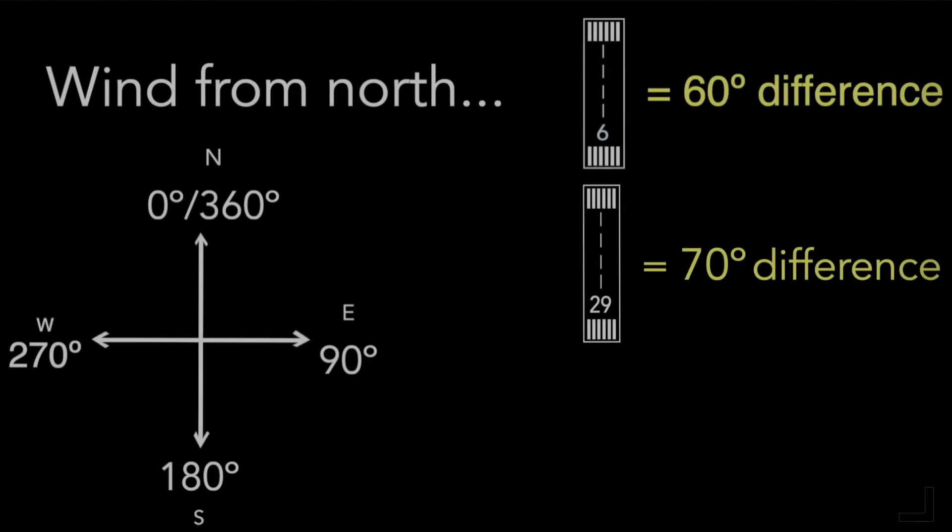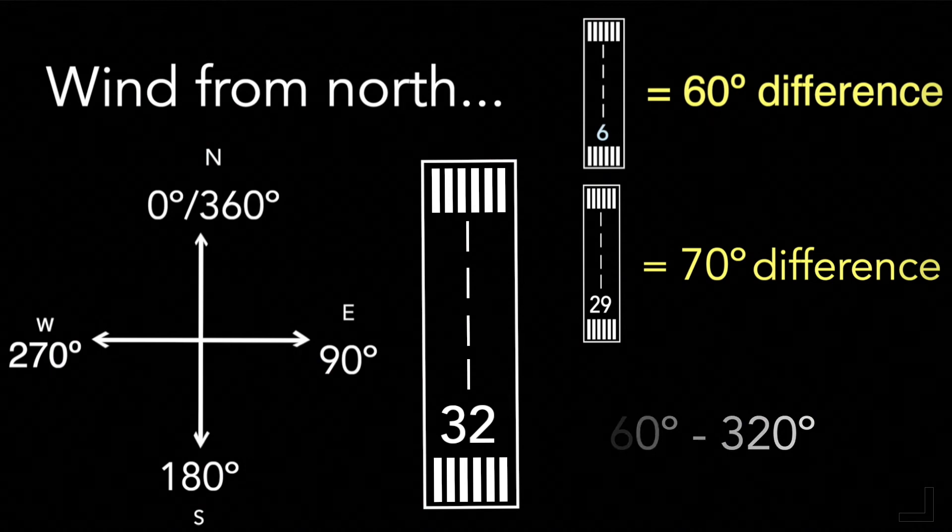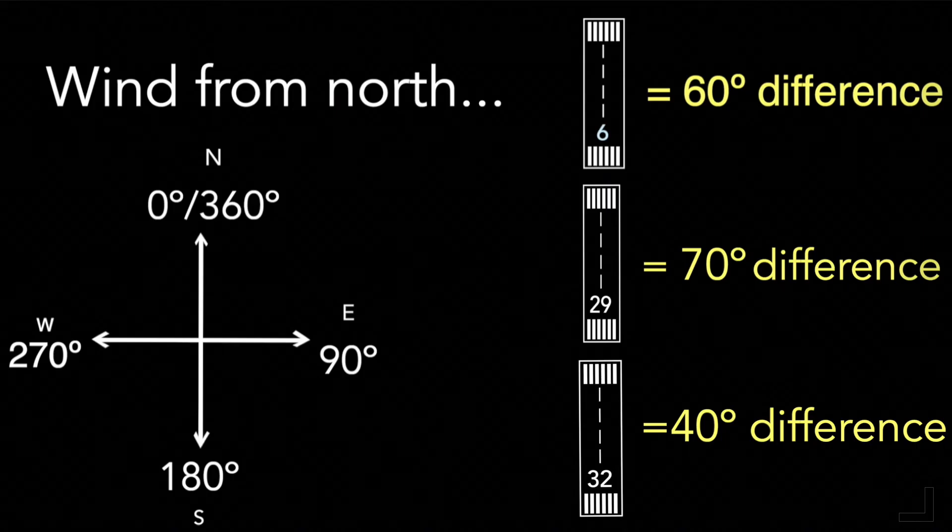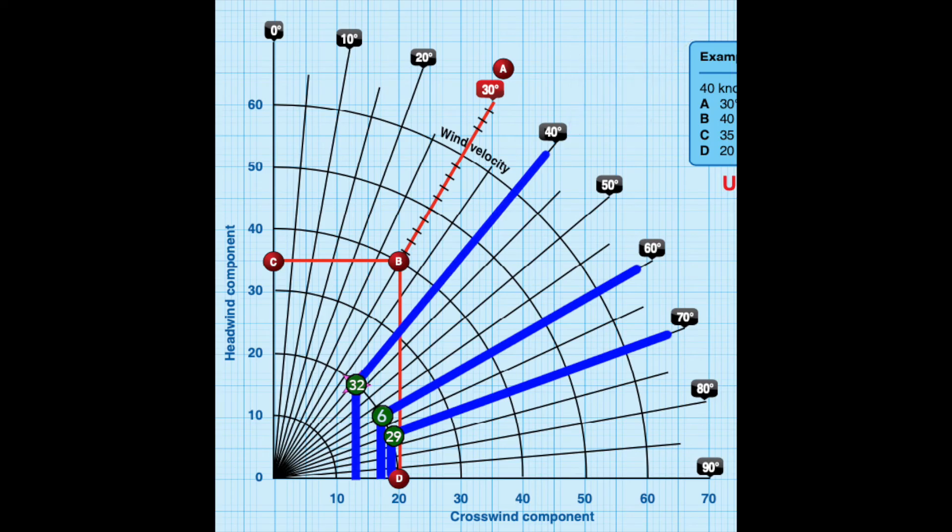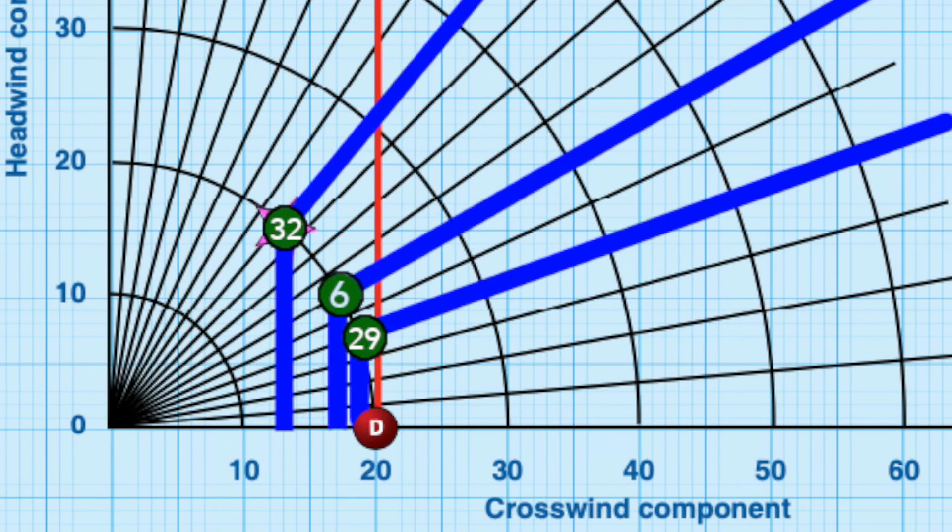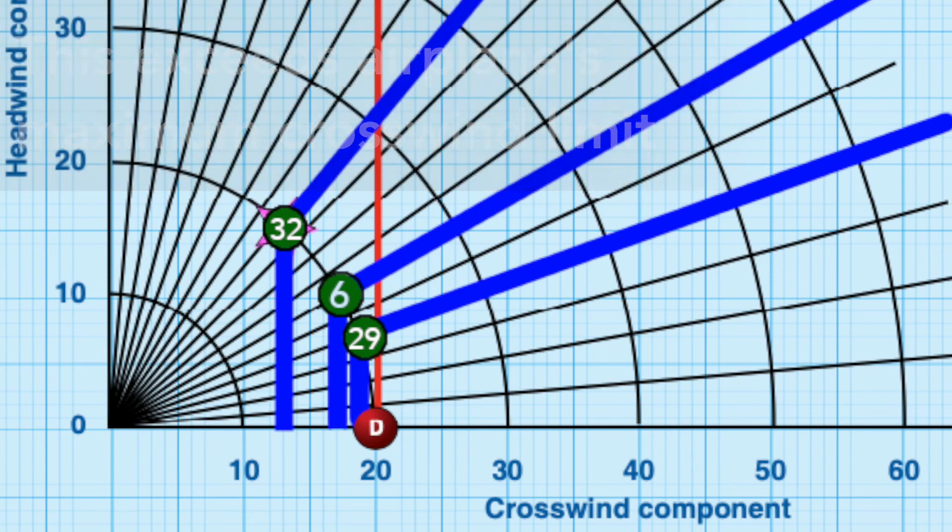Lastly with runway 32, we subtract 320 from 360. The directional difference is 40 degrees. Plotting that on the chart, we end up with this position. Now we can compare where each runway places us. With runway 6, we create a point in this position. It looks like that would be somewhere between 15 and 20 knots crosswind. That would not be good because it exceeds our airplane limit of 13 knots crosswind.